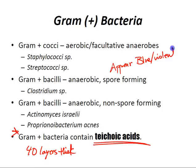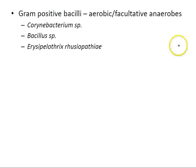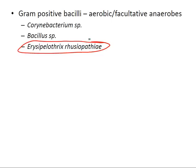Gram-positive bacilli that are aerobic and facultative anaerobes include Corynebacterium species, Bacillus, and Erysipelothrix rhusiopathiae. If you ever see that name, know it's a gram-positive bacilli.